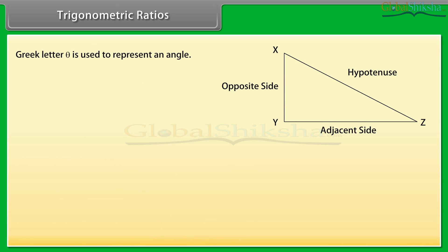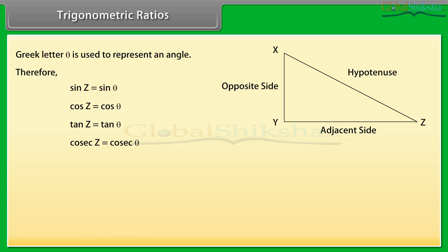The Greek letter theta is used to represent an angle. Therefore, sin Z may be written as sin theta. Similarly, cos Z equals cos theta, tan Z equals tan theta, cosec Z equals cosec theta, sec Z equals sec theta, and cot Z equals cot theta.